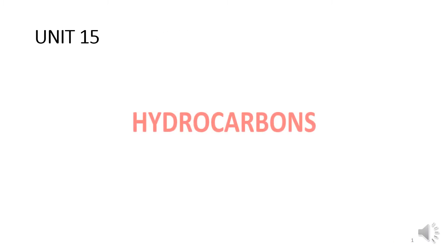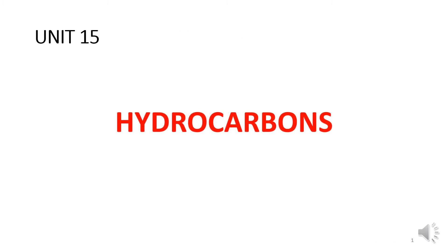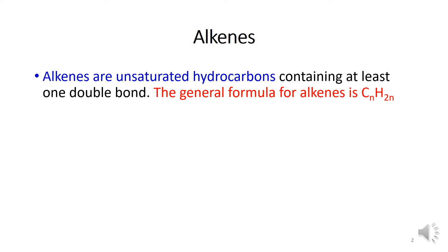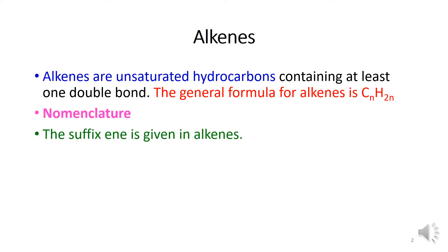Hello everyone. Today we are going to talk about alkenes in the hydrocarbon chapter. Alkenes are unsaturated hydrocarbons containing at least one double covalent bond between two carbon atoms in a compound. The general formula of alkene is CnH2n, where n is the number of carbon atoms and 2n is the number of hydrogen atoms present in alkenes. Its nomenclature: the suffix '-ene' is given in alkenes.